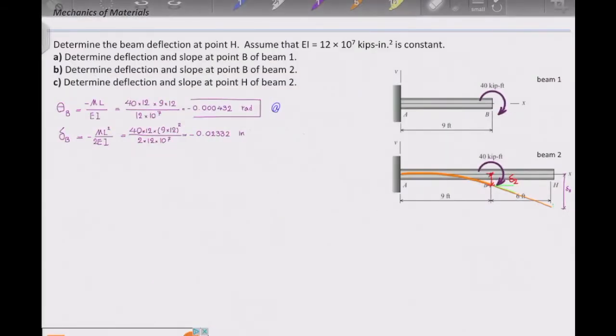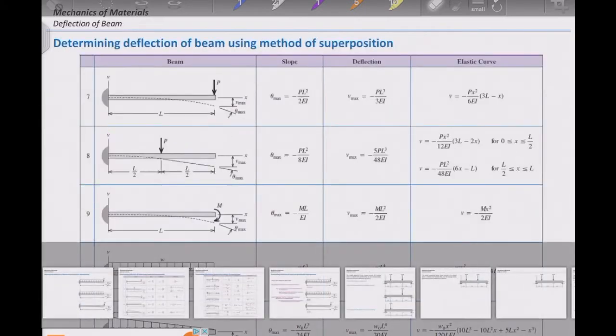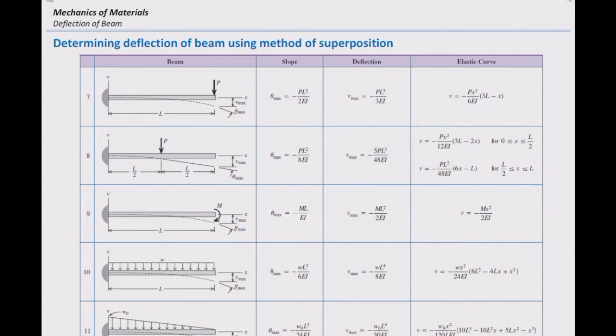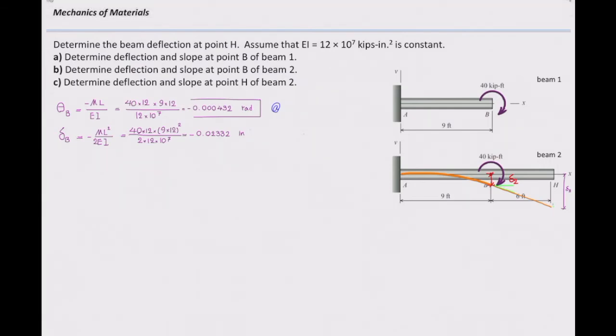This is the way that we can calculate the value of deflection for this beam. Because if you get to that table, let me show you that table again, there is not any beam which has a moment acting at the middle. So how can we determine deflection of a beam which has a moment at the middle? We use this concept that we talked about. We have answered the second part, but we haven't answered the third part.